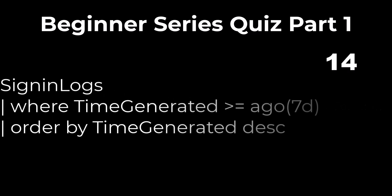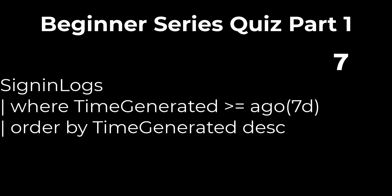Problem 3: This query will show the sign-in records for the last seven days. Time value options go up to days in KQL but do not include weeks, months, or years. In this case, seven days is used and the answer is true.